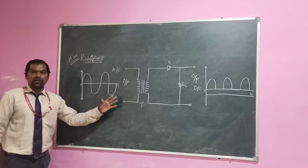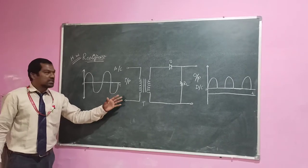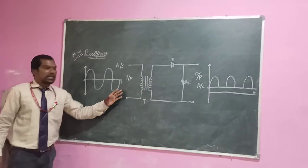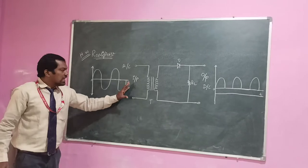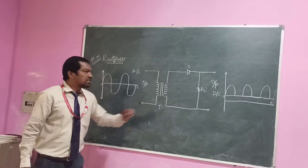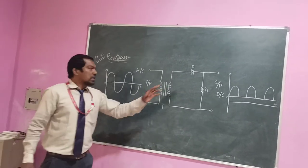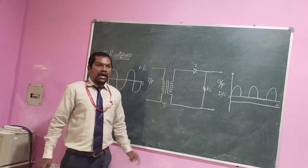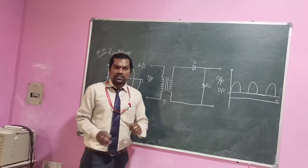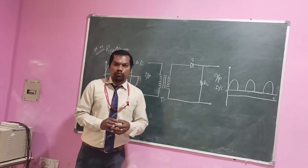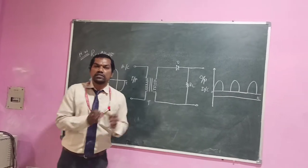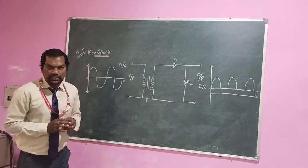The components: one is a transformer — I represent it as T. We are using one diode and a load resistance. After that we will get the output. How it works — I will explain.